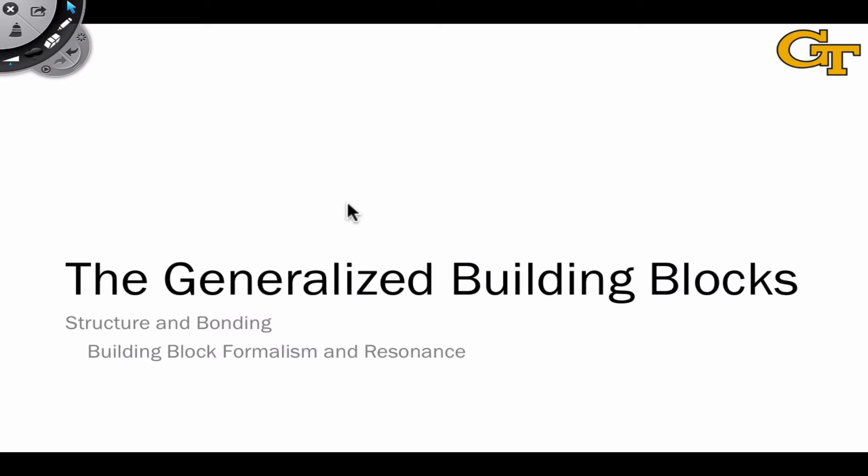In this video, we're going to take a very broad view of organic structures and look at the ways we can arrange electrons around atoms in organic structures to achieve an octet of electrons. These give rise to what are called the generalized building blocks.